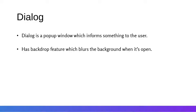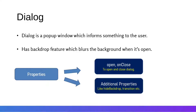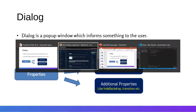The backdrop feature can be turned off as well. A dialog is a type of modal which can be opened and closed whenever requested. The main two properties are the open property and the onClose property. Whenever open is true, the dialog will be open. We can also set onClose to close it. Additional properties include hideBackdrop, which disables the blur effect, and a transition property which adds an animation to the dialog.